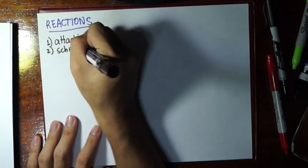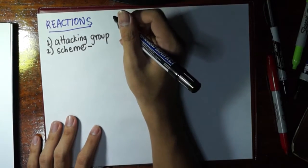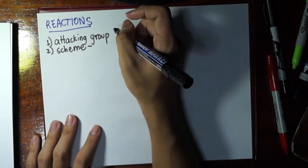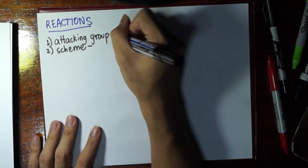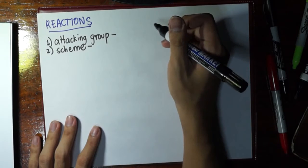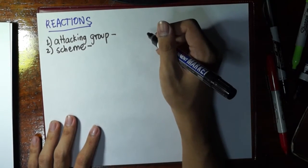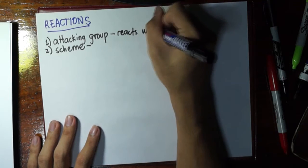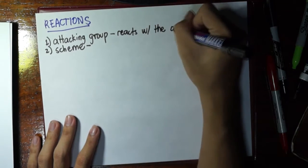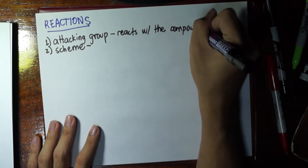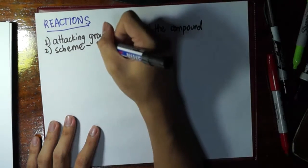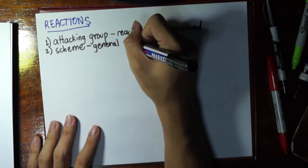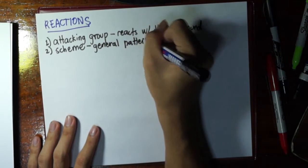A certain scheme. The scheme is in general chemistry, the scheme is if it's synthesis reaction, decomposition reaction. So we will talk about those later on. So first we go to the attacking group. The attacking group is that which reacts with the compound. And the scheme is the general pattern in the reaction.